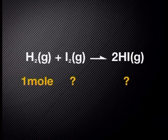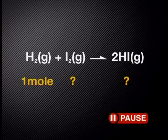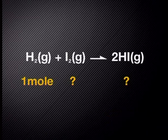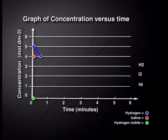Let's say one mole of hydrogen is used up. Can you predict how much iodine reactant will be used up and how much hydrogen iodide will form? I am going to show you by plotting the points on my graph. See how the concentration of hydrogen decreases from five moles per decimeter cubed to four moles per decimeter cubed.